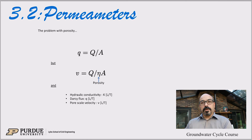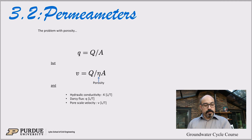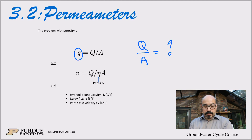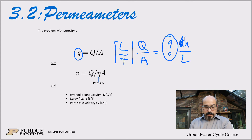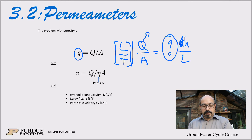One last note is the problem with porosity. We're working in porous media, so porosity is really key. If we call Q/A the Darcy flux — little q — then Q/A equals the unknown hydraulic conductivity times H/L. So if we plot Q/A versus H/L, the slope is the hydraulic conductivity. The Darcy flux has units of length per time, similar to velocity, but in reality it's not a velocity — it's a normalized flux: the discharge divided by the total area of the sand column.